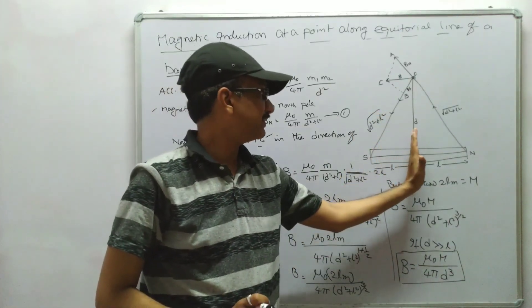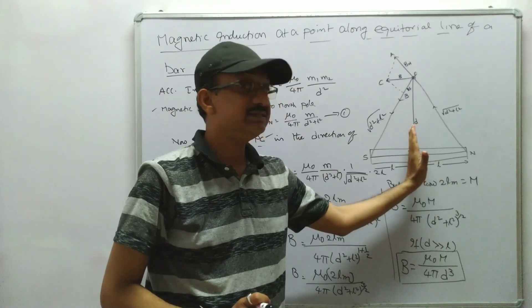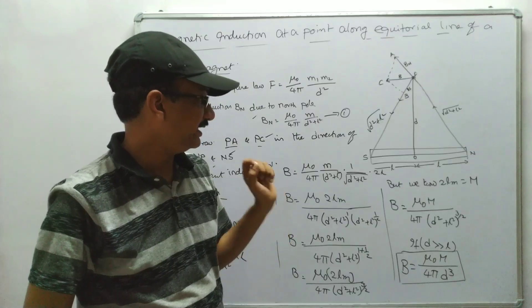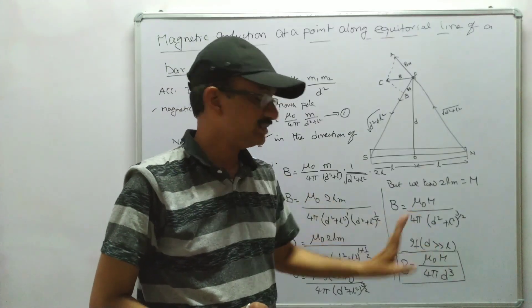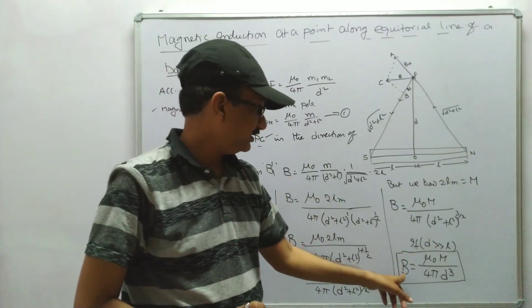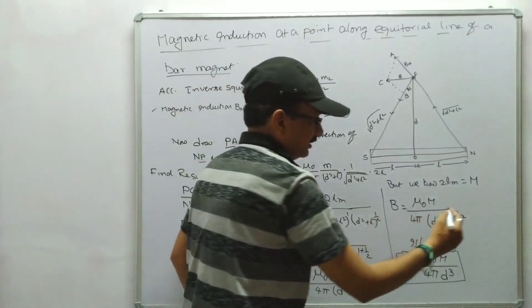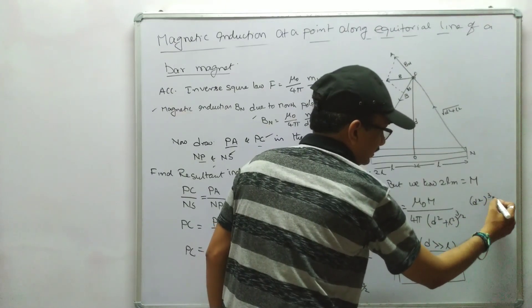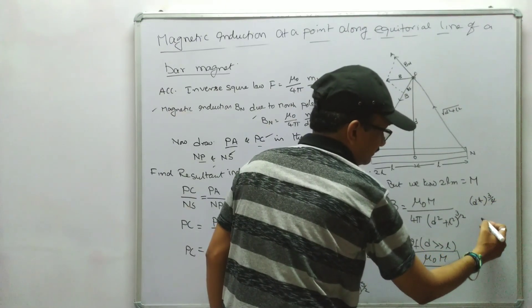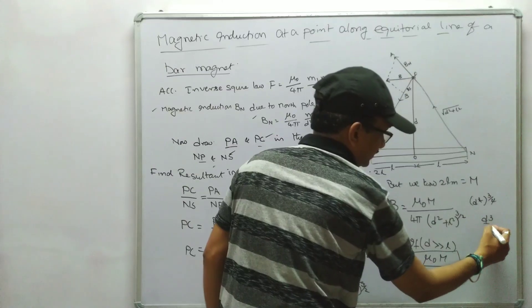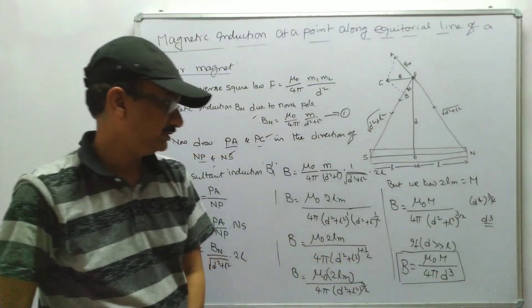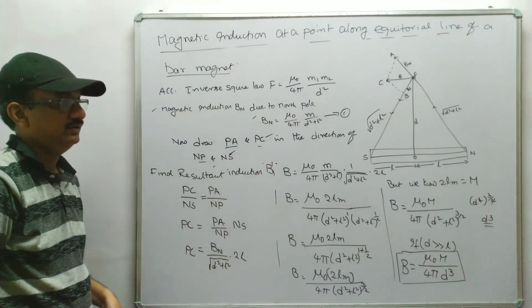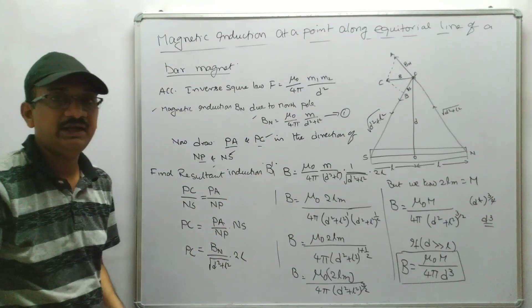If the magnet length is negligible — just like the thickness of a paper — then L becomes 0. We get d² whole power 3/2, which equals d³. So the simplified final equation is B = (μ₀ × M) / (4π × d³). This is very important for your annual examination, so prepare well.